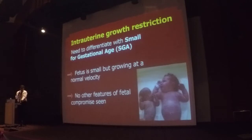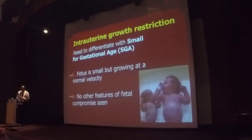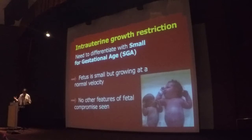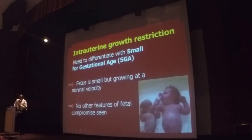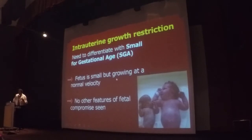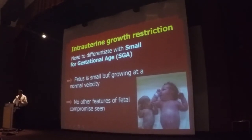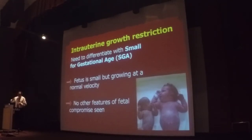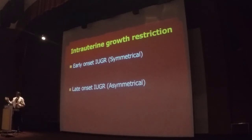When you talk about IUGR, you must differentiate it from small for gestational age. In primary care, sometimes you get referrals where the baby is small but the patient is sure of dates. In SGA, what happens is that the baby is actually growing at a normal velocity but is small, and there are no other features of fetal compromise. If you do a scan and the EFW is less than the 10th centile, you repeat another scan after two weeks. If the baby is growing but remains below the 10th centile with no other abnormal features, consider whether it is truly IUGR.